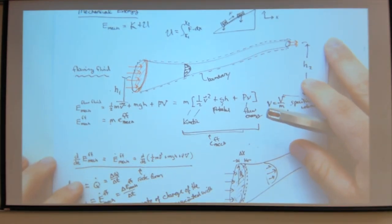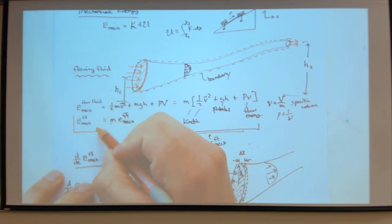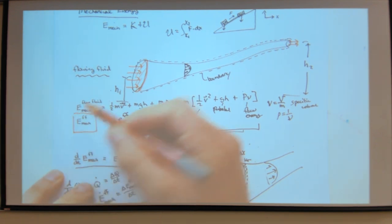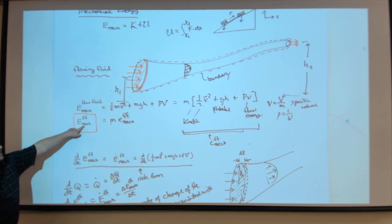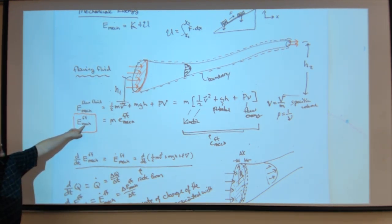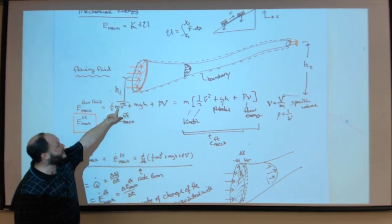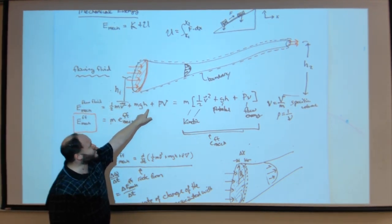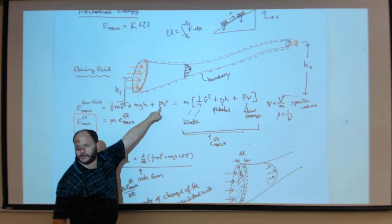We have this pipe with flowing fluid, and we introduce the idea of the energy associated with the flowing fluid — specifically the mechanical energy. If I look at purely mechanical energy, I have a kinetic component, a potential component, and then a pressure-volume kind of potential.